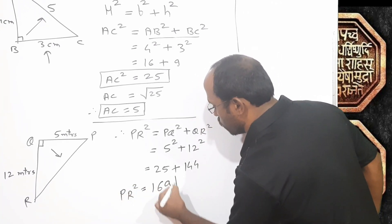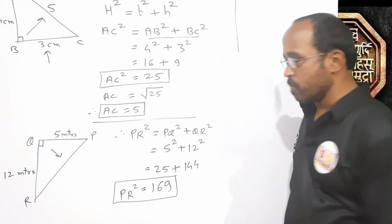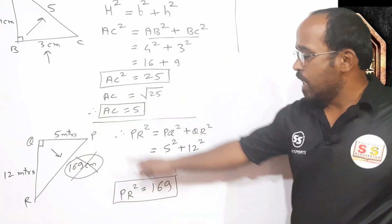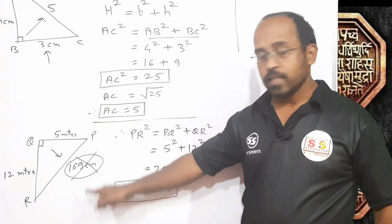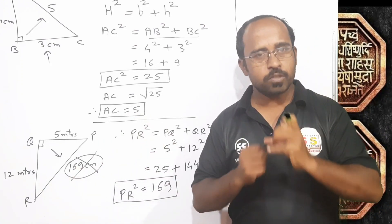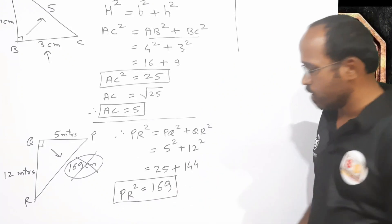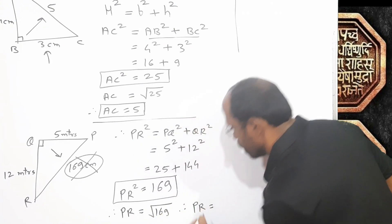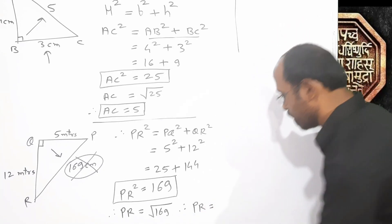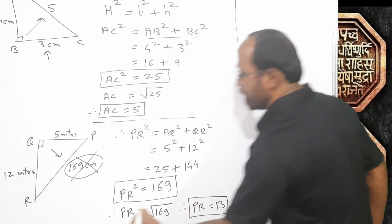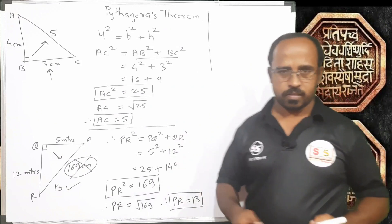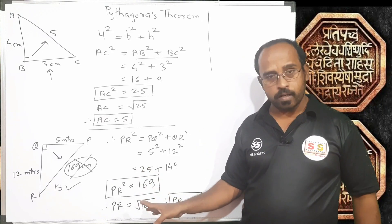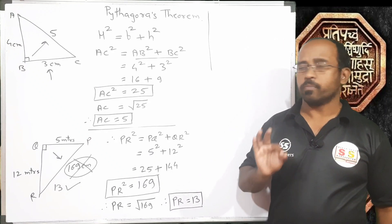PR squared equals 169. If someone says the length of PR equals 169 centimeters, he or she is absolutely wrong. This is the square of the length of PR. The length will be the square root of this. Therefore, PR equals the square root of 169. What number has a square of 169? That number is 13. So PR equals 13. If you find a square, never forget to find the square root — this is the most important thing in Pythagoras theorem.